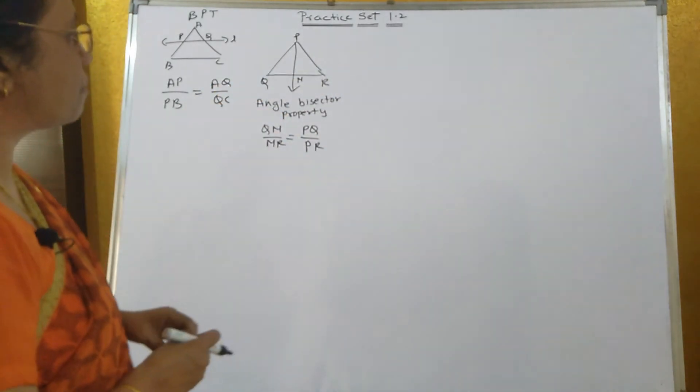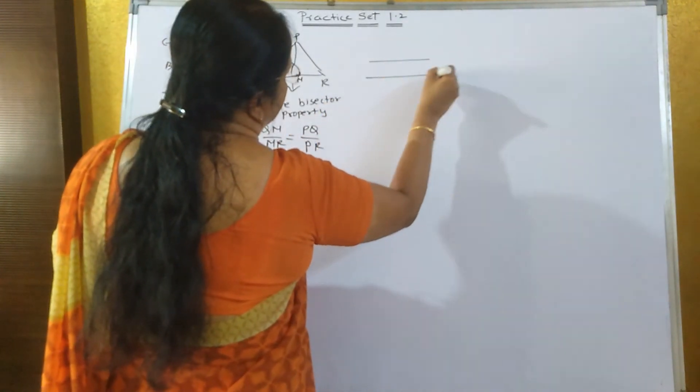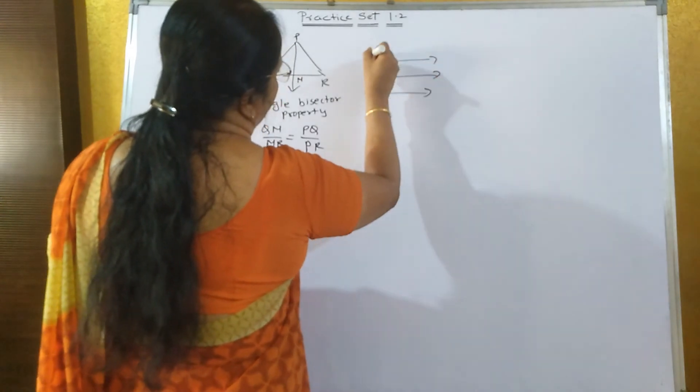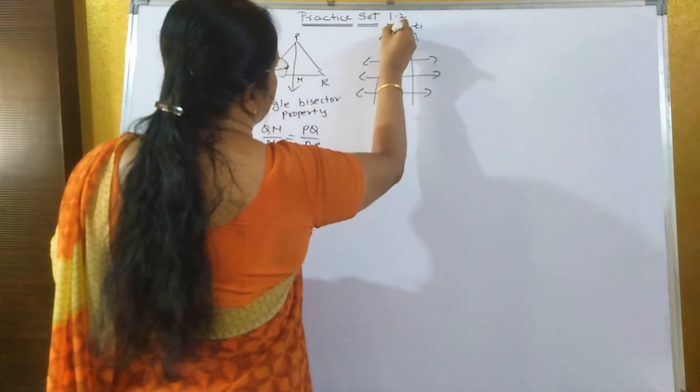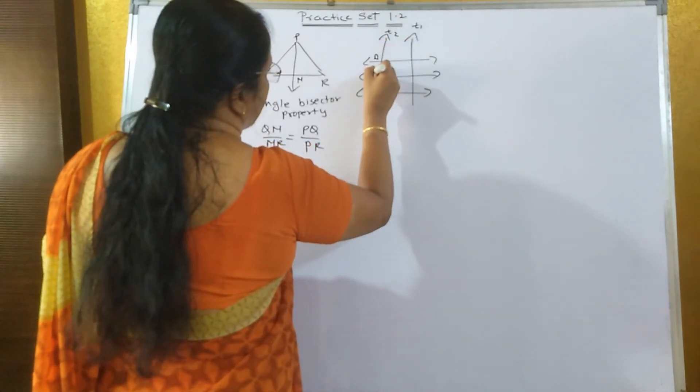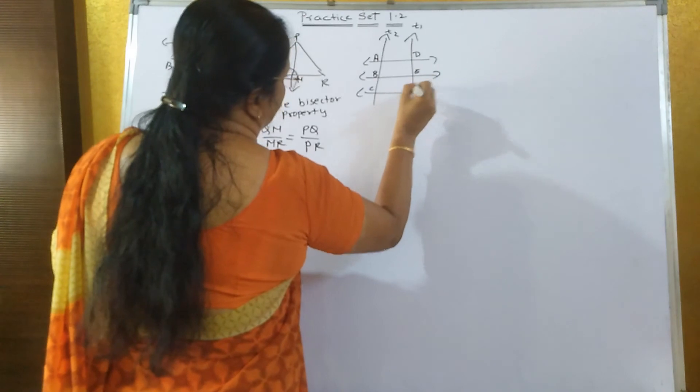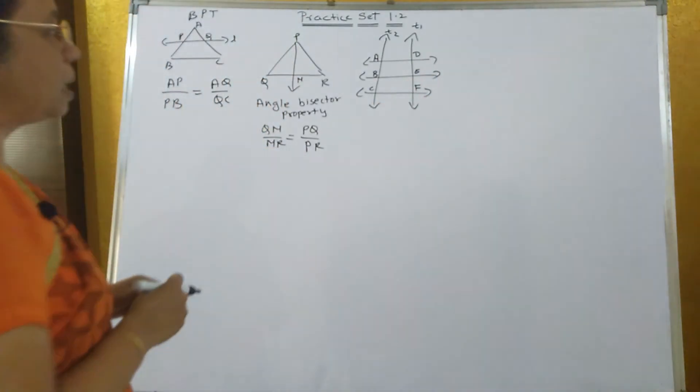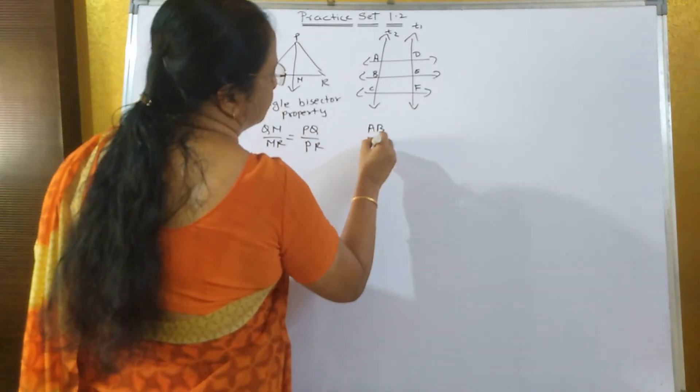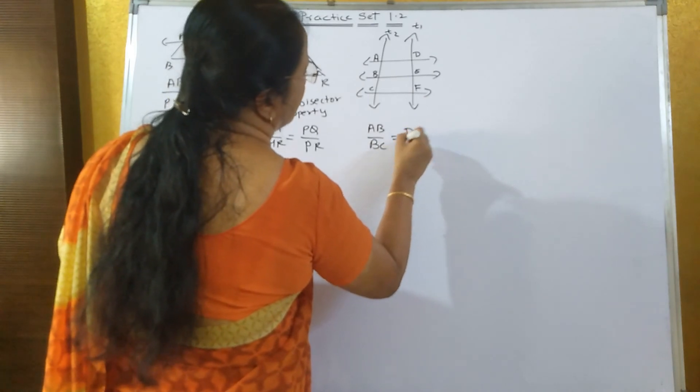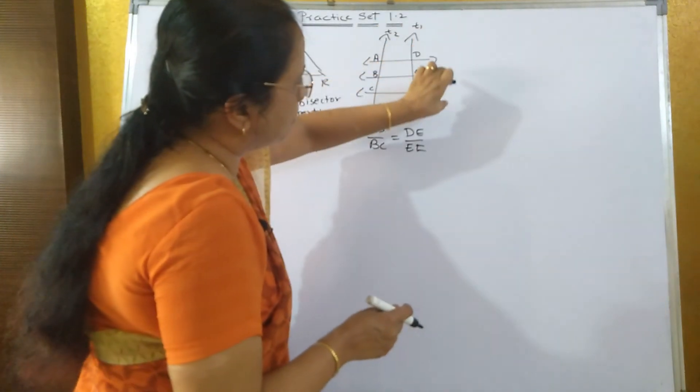The third one which we had studied: if three parallel lines are cut by two transversals, then according to the property of three parallel lines and its transversal, AB upon BC is equal to DE upon EF. These are the three properties.